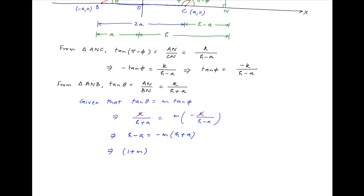This can be written as (1 + M)H = A(1 - M).